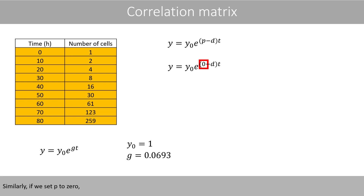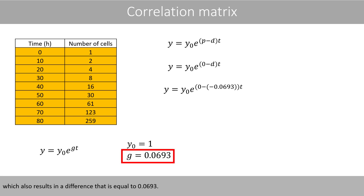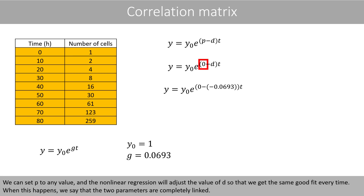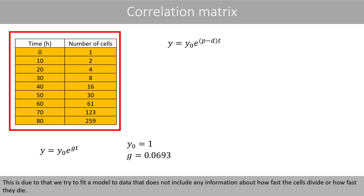Similarly, if we set P to 0, D can be set to negative 0.0693, which also results in a difference equal to 0.0693. We can actually set P to any value, and the nonlinear regression will adjust the value of D so that we get the same good fit every time. When this happens, we say that the two parameters are completely linked. This is due to the fact that we try to fit a model to data that does not include any information of how fast the cells divide or how fast they die.